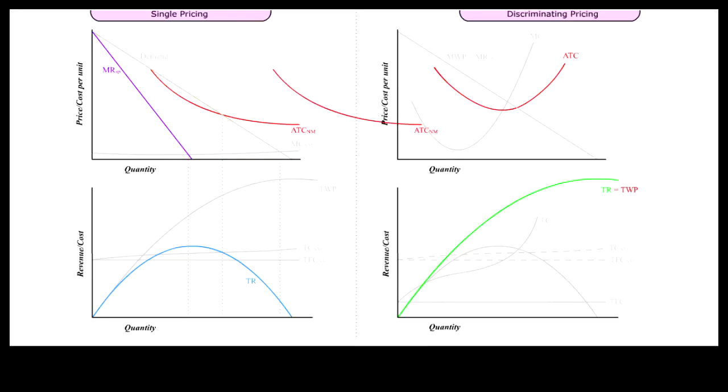Observation 4: For the same high output level, the natural monopoly ATC is lower than the low fixed cost model.